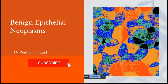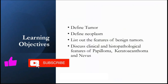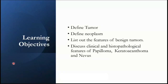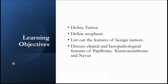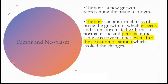We'll start by defining what's a tumor and what's a neoplasm, and then we'll list out some common features of benign tumors — all benign tumors have some similar features. We will discuss squamous papilloma, keratoacanthoma, and nevus. There are many benign epithelial neoplasms but we are going to discuss these three because they're more common compared to others when it comes to clinical appearance — they could come to your clinic with that.